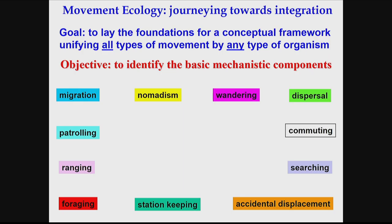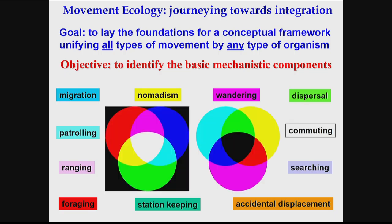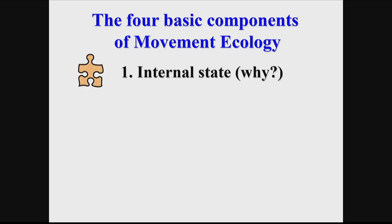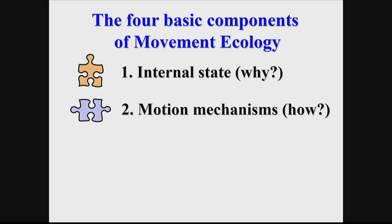Across the diversity of phenomena — migration, dispersal, foraging — ranging from microorganisms to plants to all animals, we want to find the two, three, or four basic components that in different combinations give rise to this high diversity. We propose four basic components. The first is the internal state — the energetic or mental state from which motivation to move is derived. The animal is hungry; the motivation is to find food. A predator appears; the motivation is to escape. The internal state determines why organisms move.